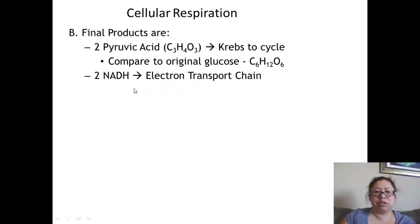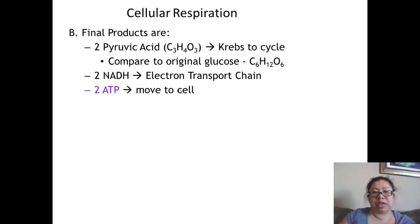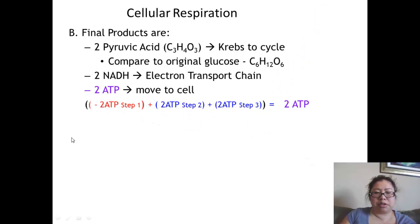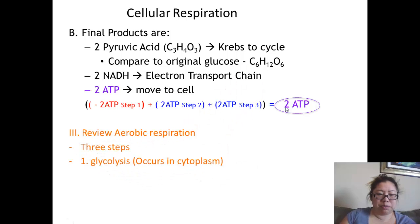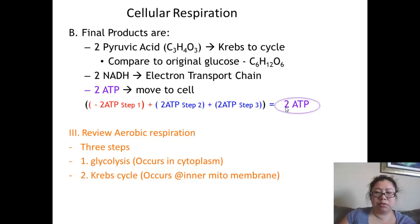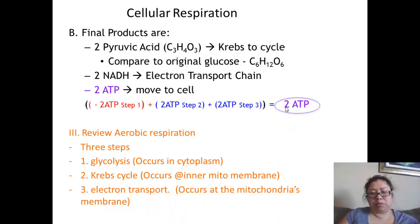In that process, we gain two NADHs — lesser forms of energy, like change — which we'll convert to ATPs when we get to the electron transport chain. We have two net ATPs which the cell can use. Step one used two ATPs; steps two and three produced four ATPs, giving us a net of two ATPs. In review, glycolysis is the first step of cellular respiration and occurs in the cytoplasm. The second step, the Krebs cycle or citric acid cycle, and the electron transport chain will be explained in further videos. Thank you for listening, and we'll see you next time.